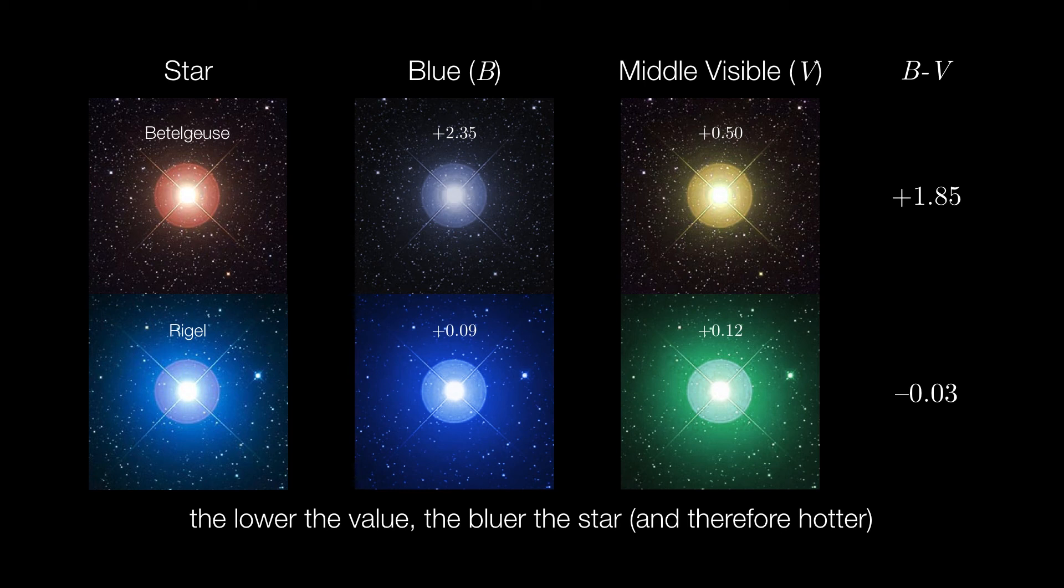We can simply put a blue filter in front of the camera, measure its blue magnitude, and then put a visible light filter in front of the camera and measure its visible light magnitude, and then make that comparison and calculation.